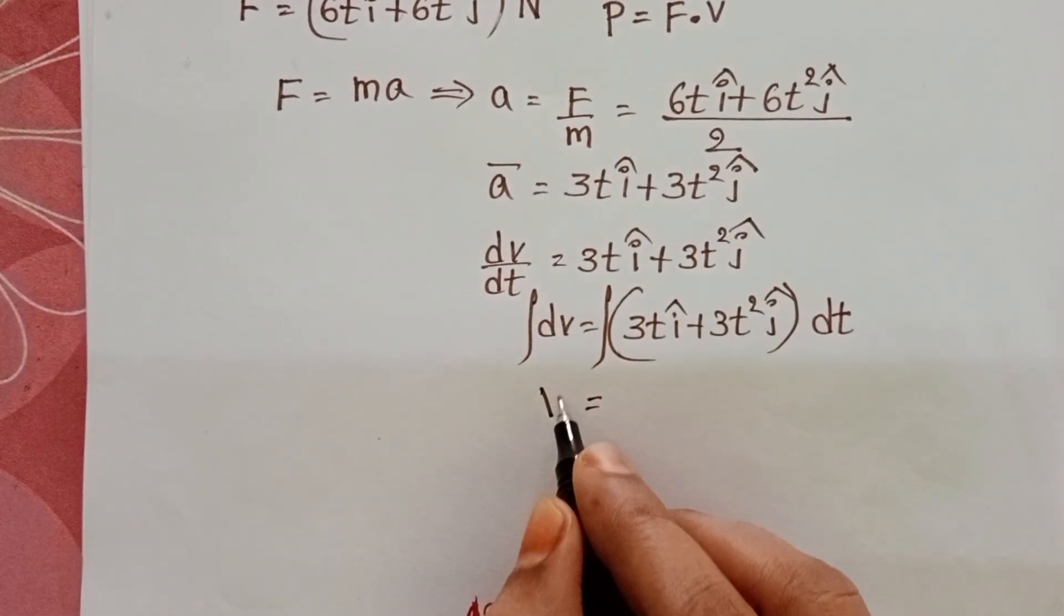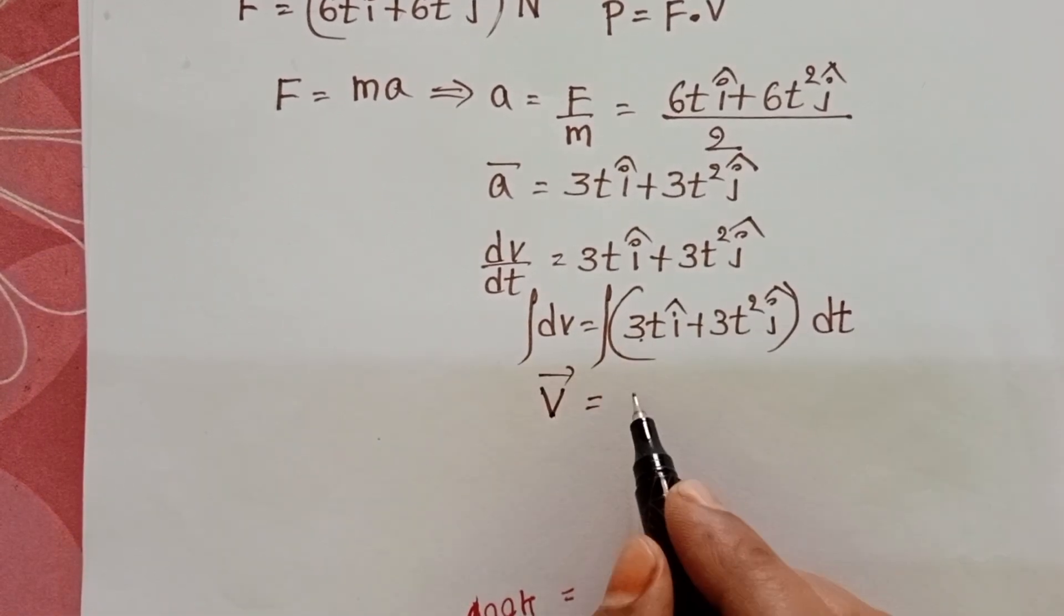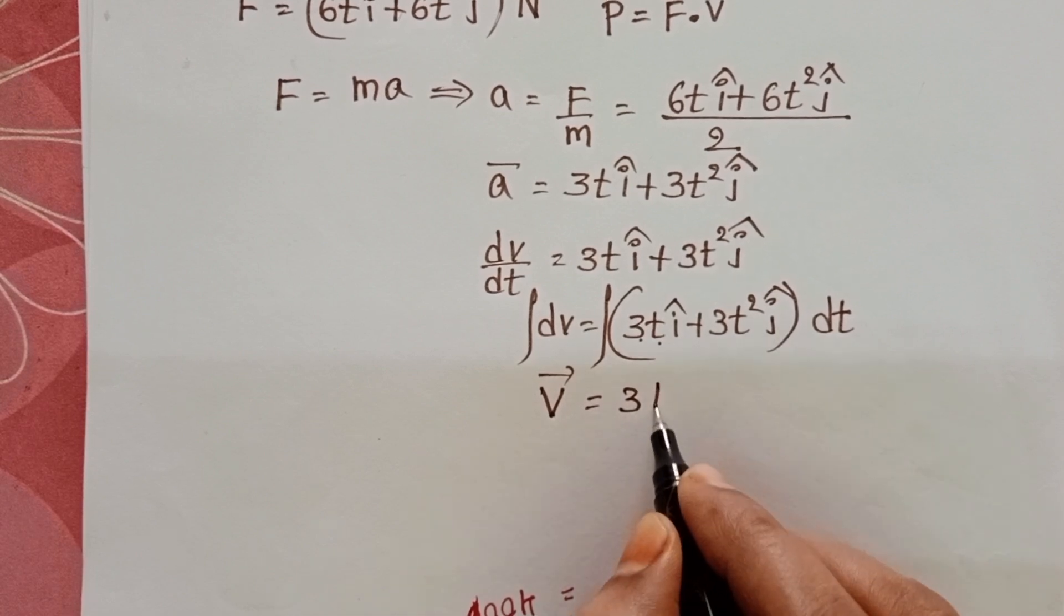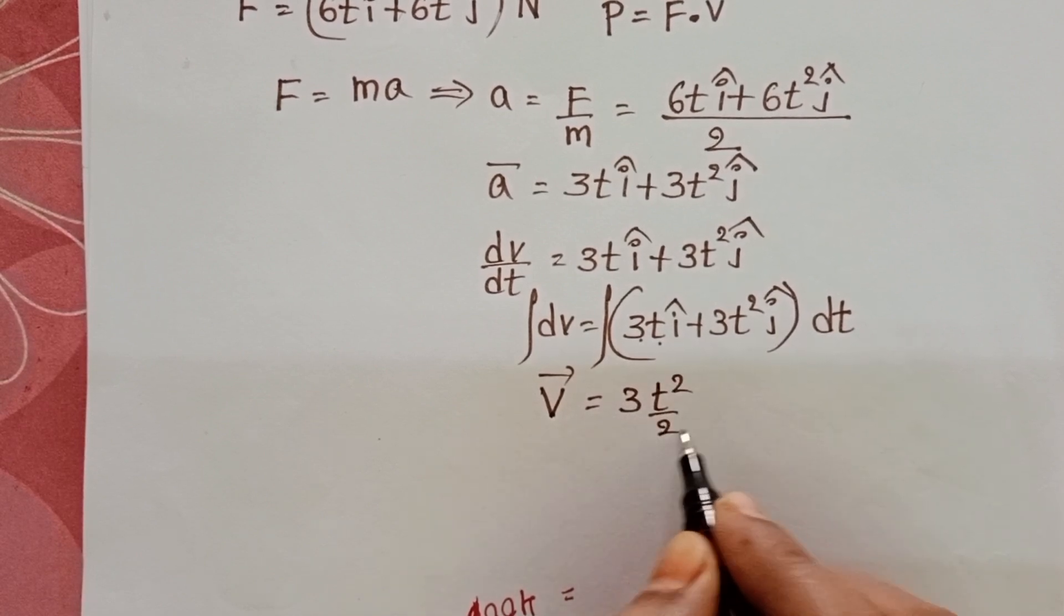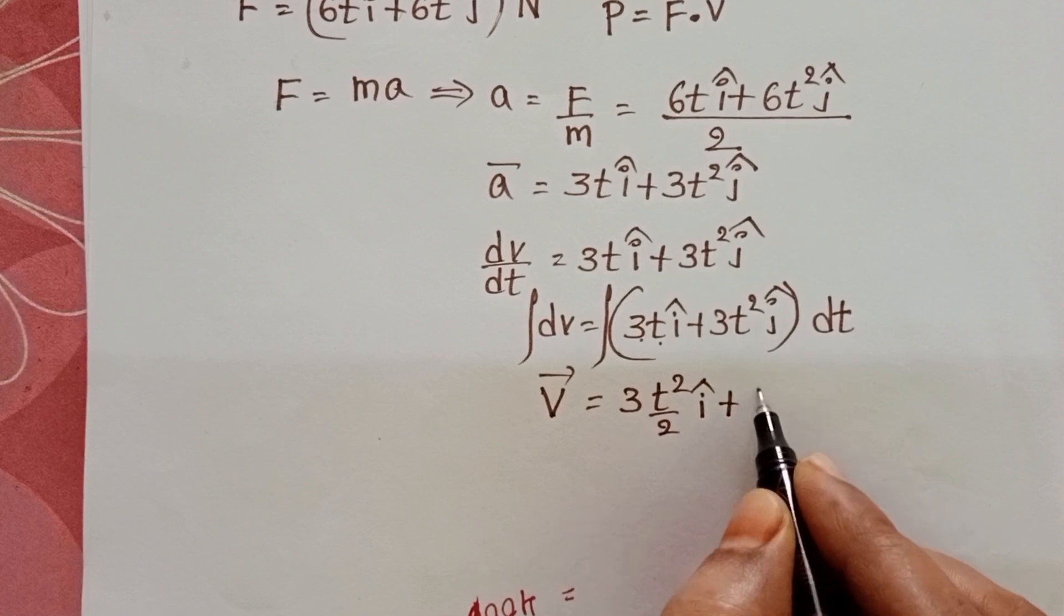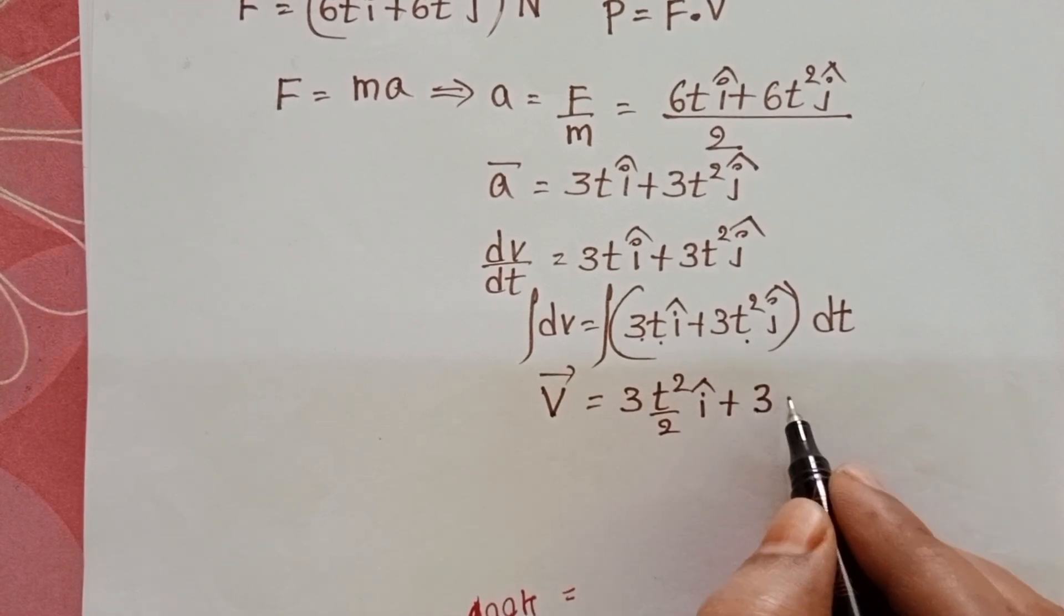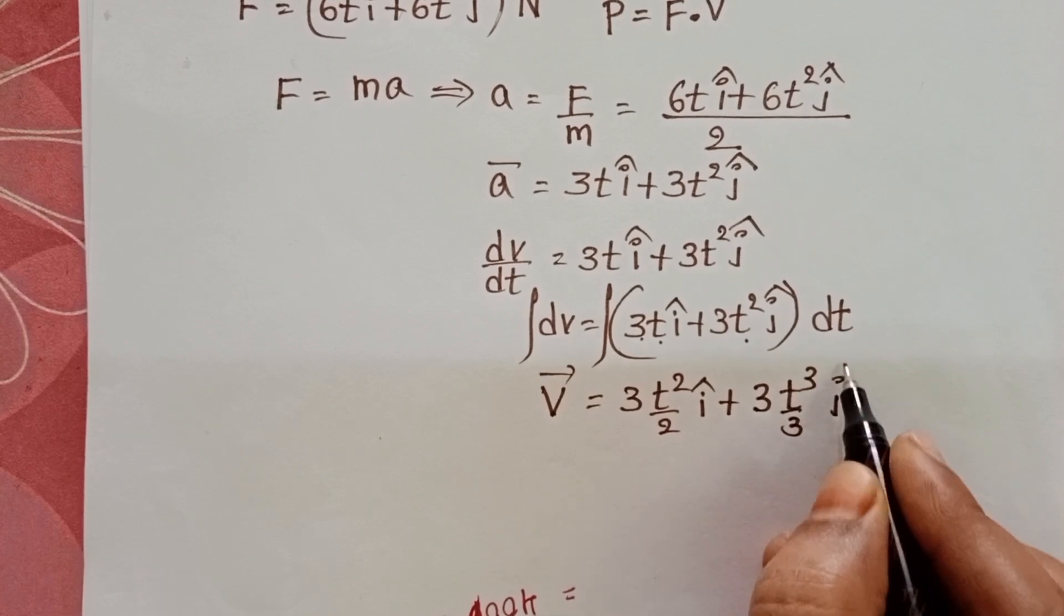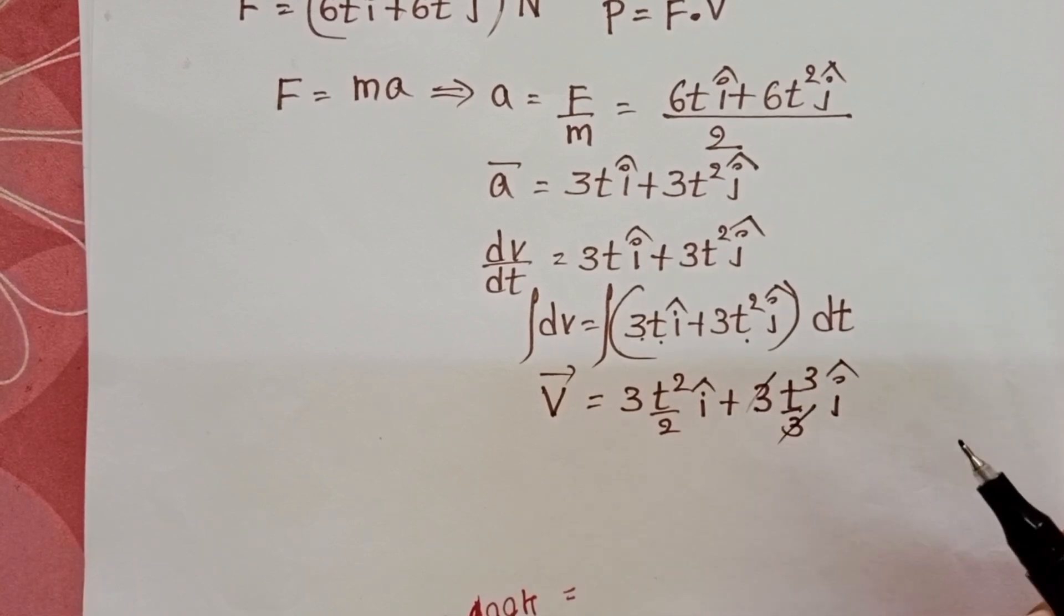Integral of dV equals V. 3 is constant. Integral of t dt equals t²/2 î plus 3 times integral of t² dt equals t³/3 ĵ. Here the 3s cancel.